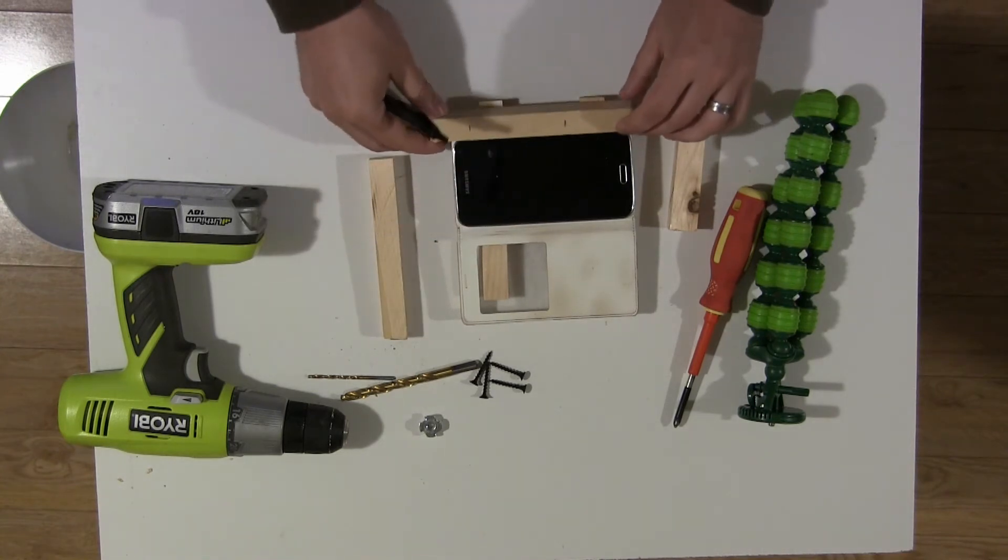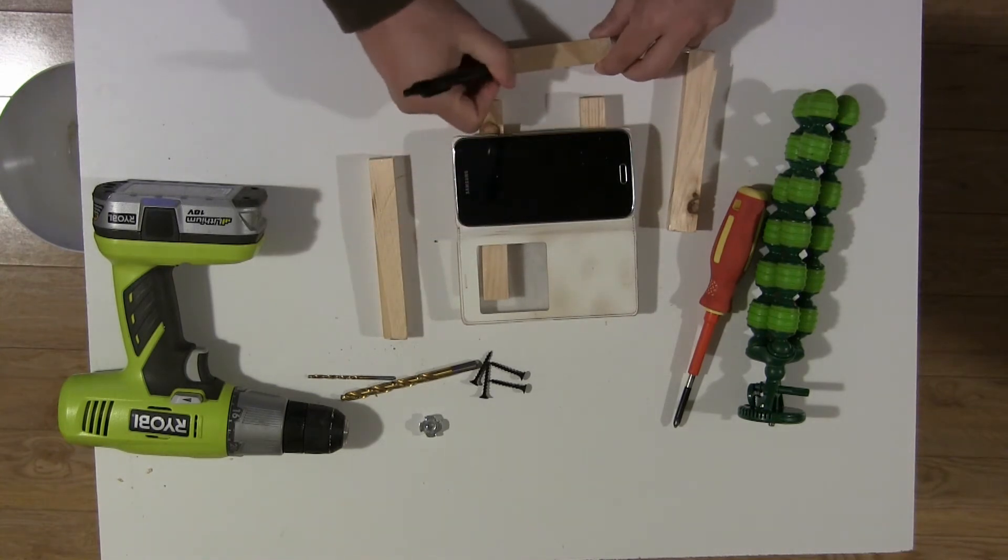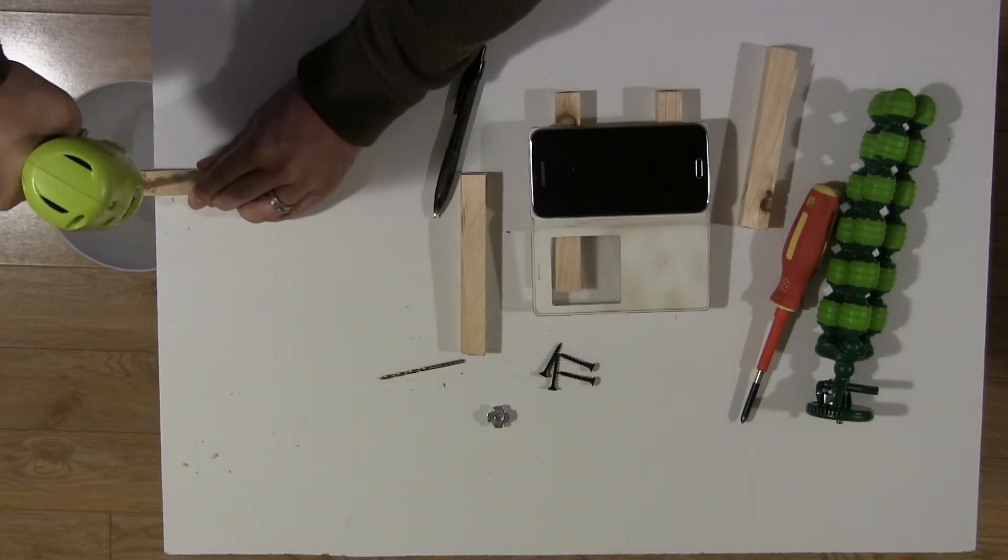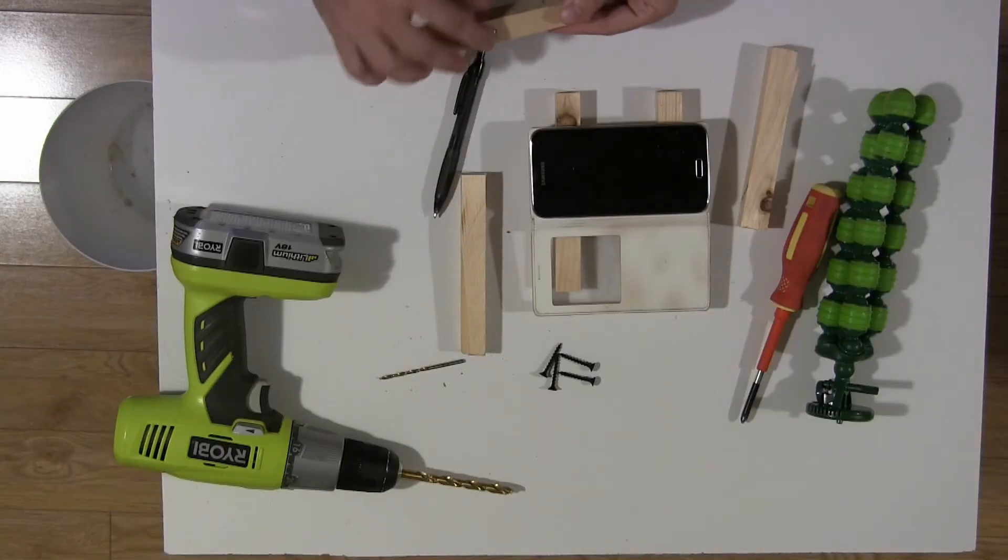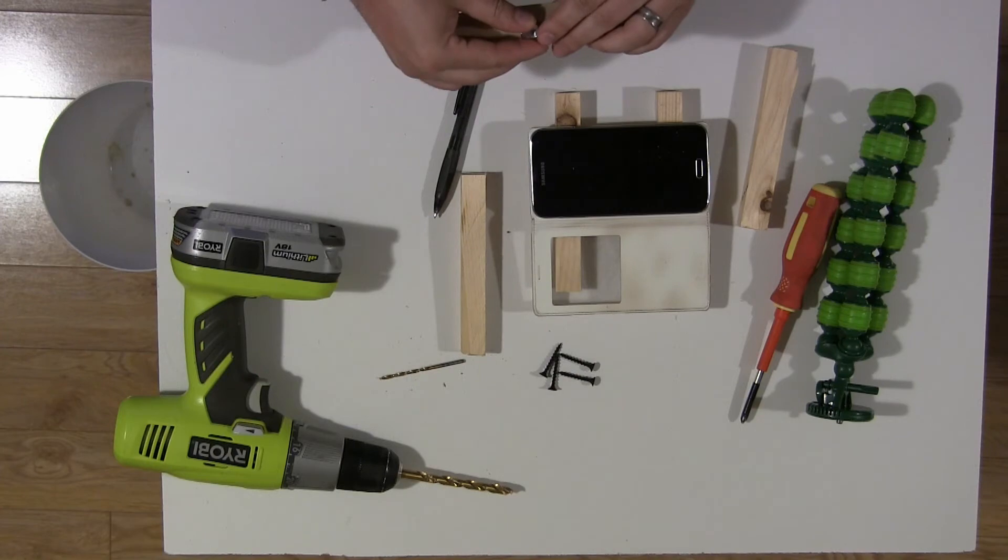Once you've got this set up, you want to mark your hole for the t-nut. Now with such a small piece, odds are you're going to split the wood when you put in your t-nut with the little teeth. That's okay, don't worry about it.